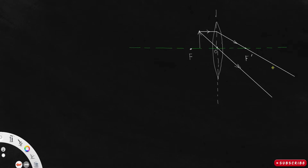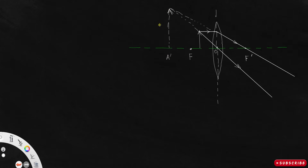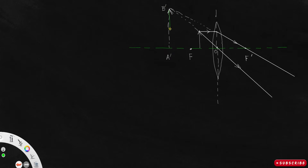Clearly these two rays won't meet on the right side, so I have to extrapolate them to the left so that these two rays virtually meet and an image is formed there. This image is A'B', and the object is AB.